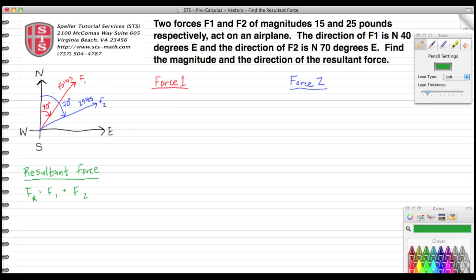Welcome back to Speller Tutorial Services. Today we're going to continue our talk on vectors. We begin with the question above: two forces F1 and F2 of magnitudes 15 and 25 pounds respectively act on an airplane. We see that depicted here in the drawing. Force 1: 15 pounds magnitude. Force 2: 25 pounds magnitude.